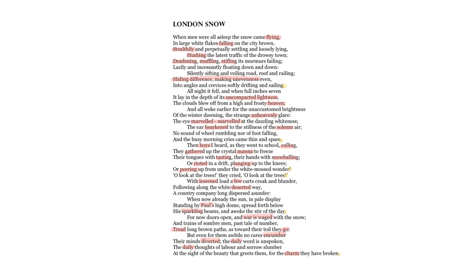Once you've figured out where each sentence starts and stops, the next thing to think about is whether there's any significant variation in sentence length and what clues that might give you about the tone or pace of the poem. So two sentences, both of nine lines, to begin the poem. Then we've got five lines — getting a bit shorter. Then one line. Then from 'with lessened load' down: one, two, three, four, five, six lines. And then the final sentence: one, two, three, four, five, six, seven lines. So the longest sentences come at the beginning of the poem, two of equal length.